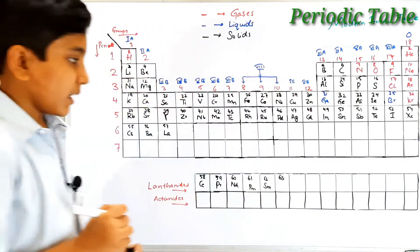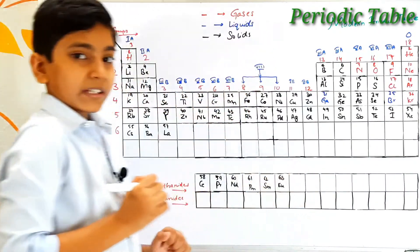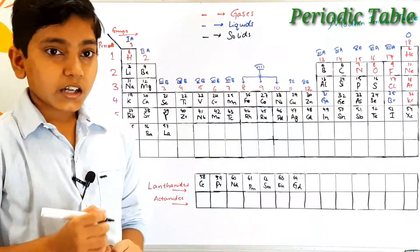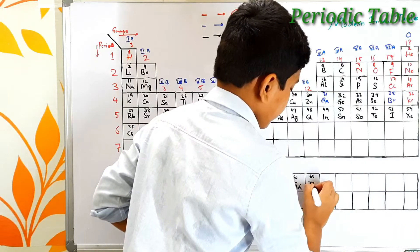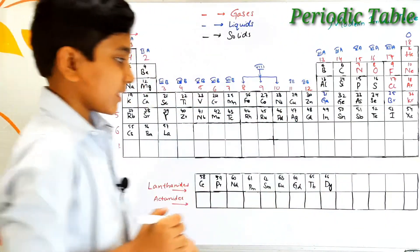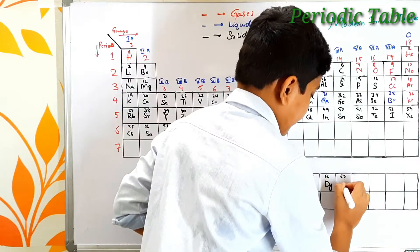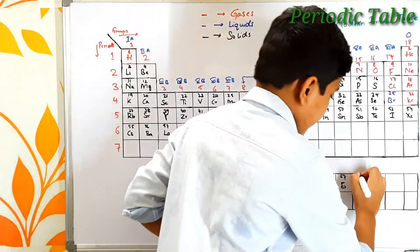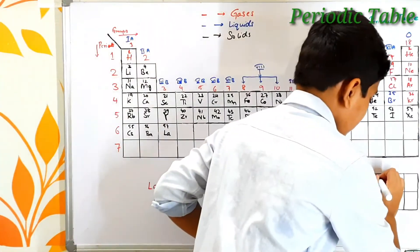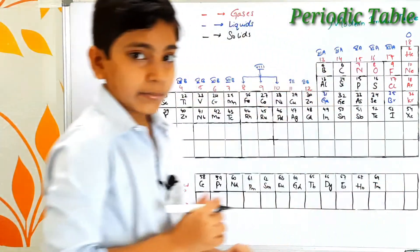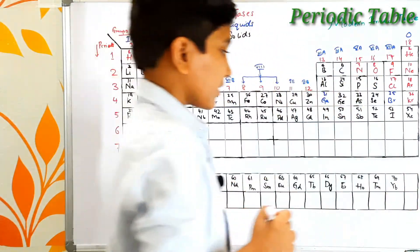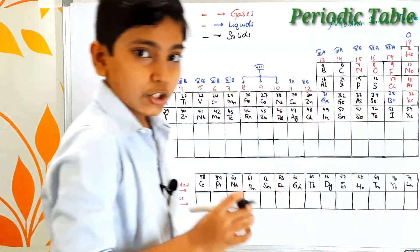Atomic number 64 is gadolinium, atomic number 65 is terbium, atomic number 66 is dysprosium, atomic number 67 is holmium, atomic number 68 is erbium, atomic number 69 is thulium — symbol Tm. Atomic number 70 is ytterbium — symbol Yb, and atomic number 71 is lutetium — symbol Lu.